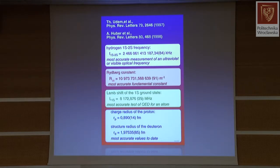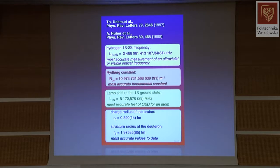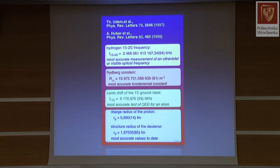About 20 years ago, we measured the frequency of the 1S-2S transition in a heroic effort involving a large, complex harmonic laser frequency chain at the German National Metrology Institute and a Russian-built methane-stabilized helium-neon laser that we shuttled back and forth between Braunschweig and Garching. This made it at the time the most accurate measurement of an ultraviolet or visible optical frequency. From this we got a new value of the Rydberg constant, claimed as the most accurately determined fundamental constant. Comparing different transitions in hydrogen, we also measured the Lamb shift of the ground state — then the most accurate test of quantum electrodynamics for an atom — and determined the charge radius of the proton and the structure radius of deuterium.